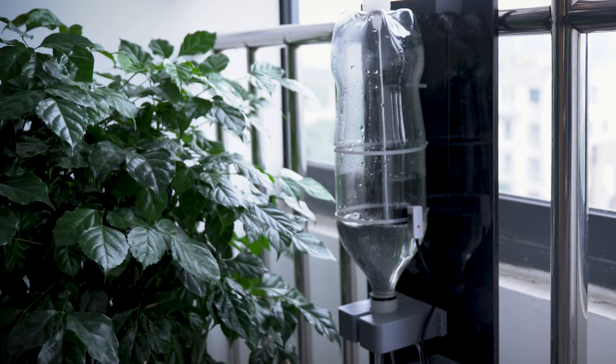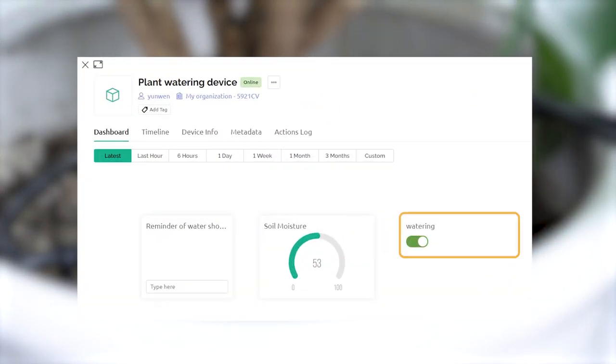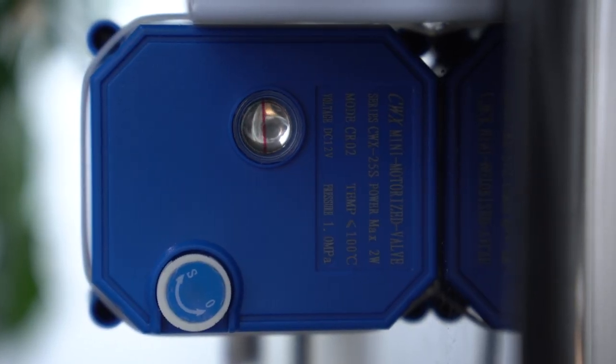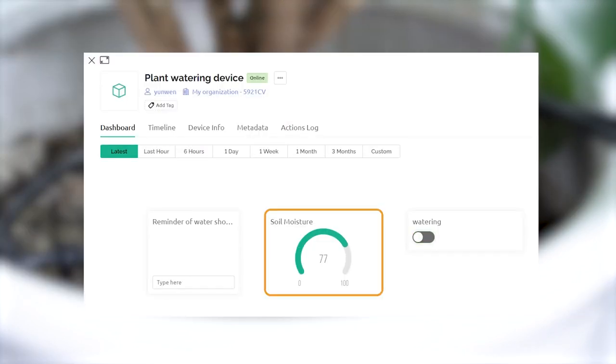Refill the water tank and it's all ready to go. If the soil humidity is lower than the threshold, the valve will open to water our plants through drip irrigation. Otherwise, it will close to avoid drowning.